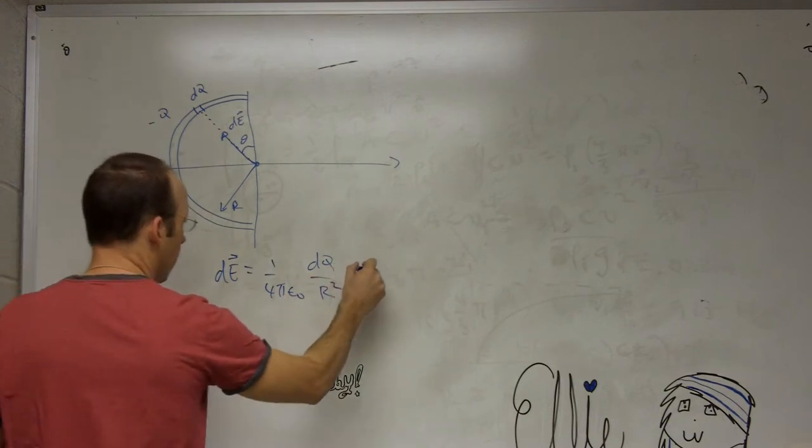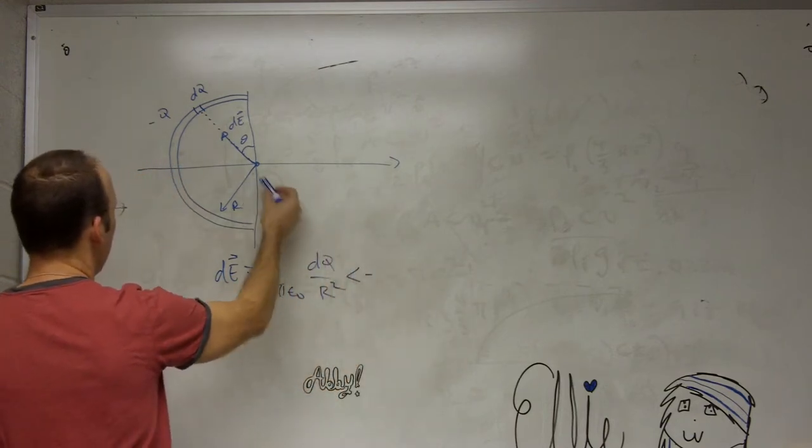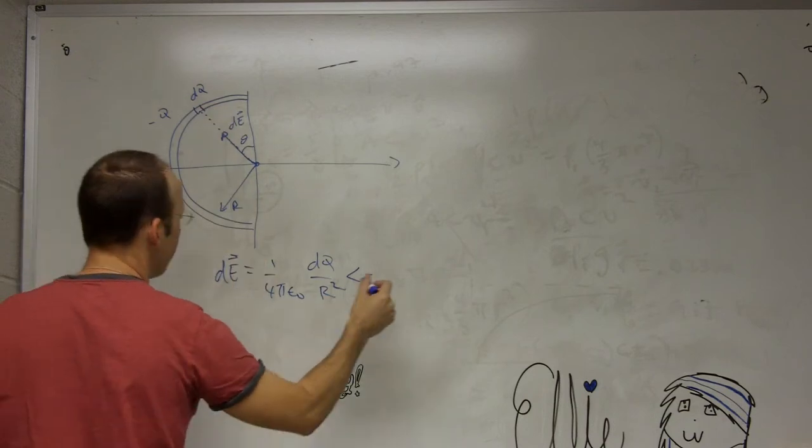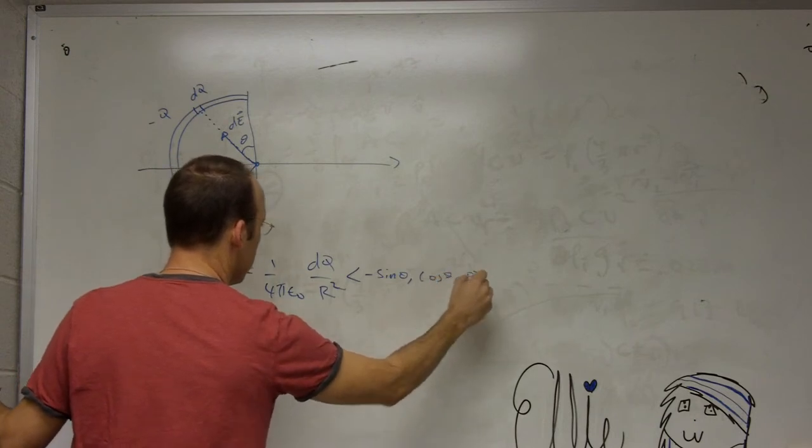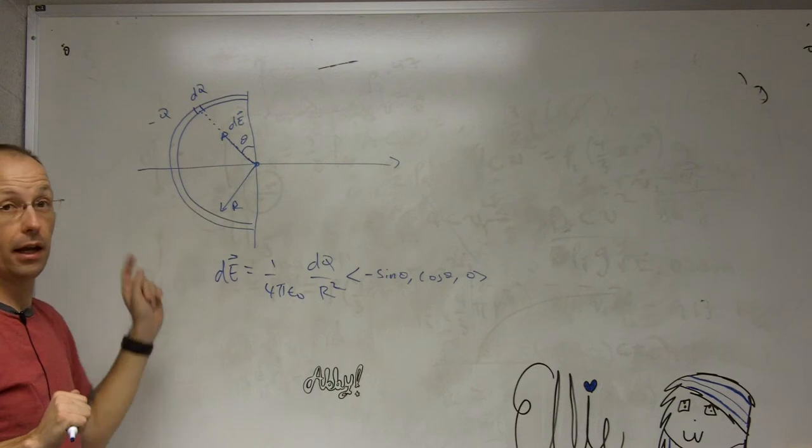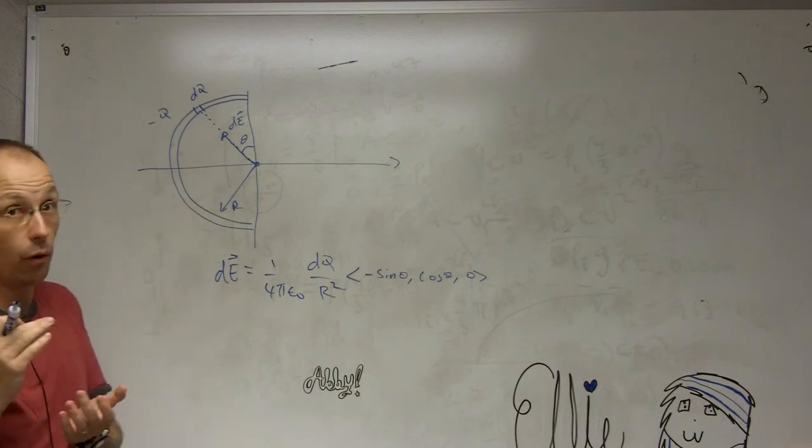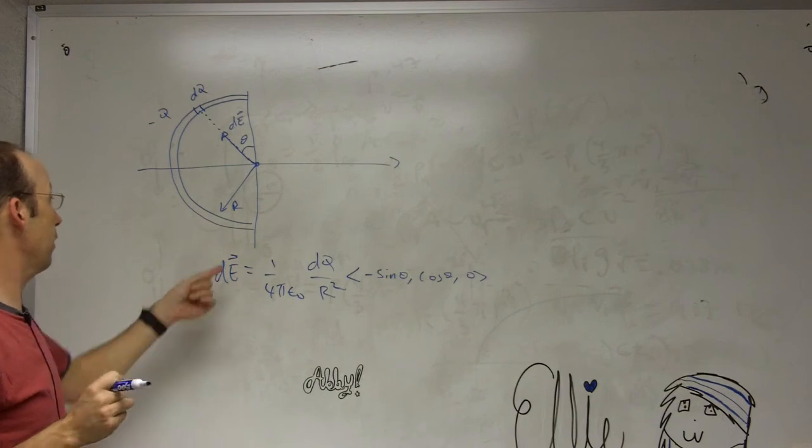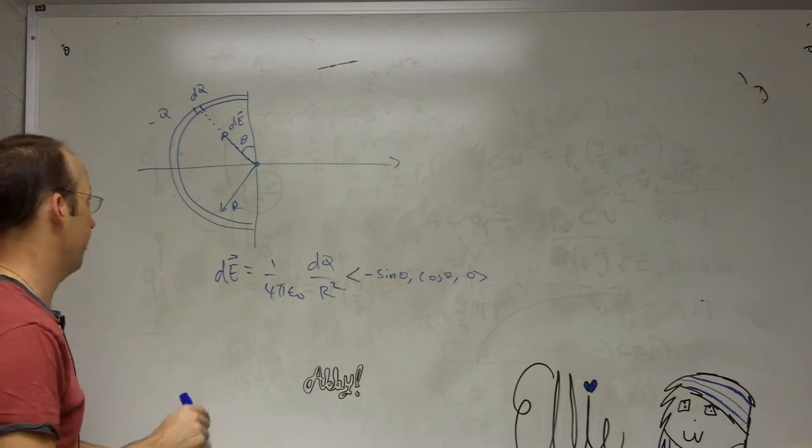And then I can write that as a vector. I can write that as negative sine theta, cosine theta, zero. That gives me the unit vector in that direction if I have that angle. So that's my piece. I mean, really, if I wanted to, I could say add up all the pieces, set up an integral going around the whole thing, but I want to be a little bit smarter than that.